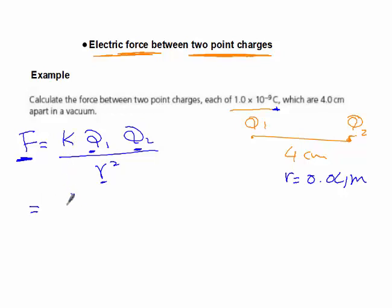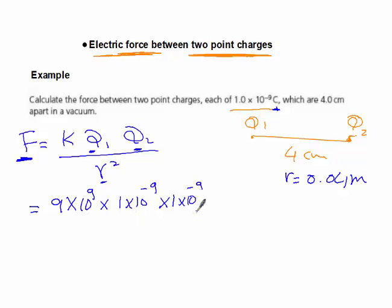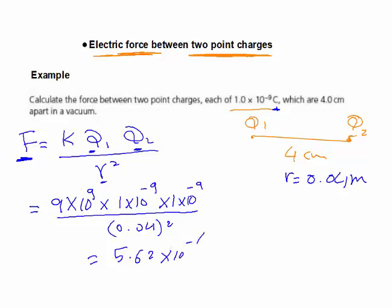Substituting: K is the constant 9 times 10 to the 9. Each charge is 1 times 10 to the minus 9 Coulombs. So we have 9 times 10 to the 9, times 1 times 10 to the minus 9, times 1 times 10 to the minus 9, divided by 0.04 squared. This gives us 5.62 times 10 to the minus 6 Newtons.